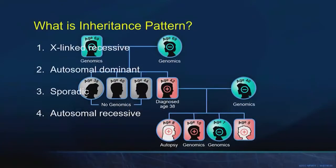Thank you, and I'll come over to Dr. Geske for some questions. All right, thanks Mike — I always learn something. Let's go through the pre-test question and some additional questions. What inheritance pattern do we see in this pedigree? We've got individuals who are positive shown in red. Options: X-linked recessive, autosomal dominant, sporadic, or autosomal recessive. The majority chose autosomal dominant.